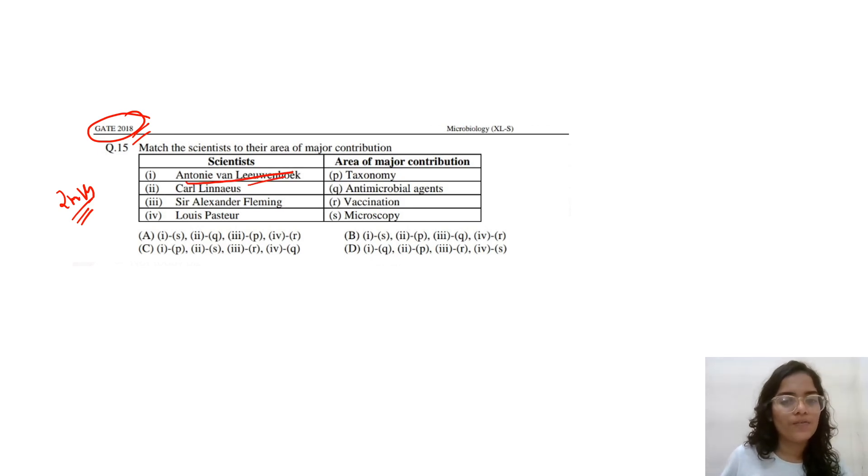So, what is Anthony Van Leeuwenhoek, who is famous for the discovery of a microscope. Then, Carl Linnaeus, who we know because he gave us the taxonomy. And Sir Alexander Fleming, who discovered penicillin, an antimicrobial agent. And Louis Pasteur, who discovered vaccination. Smallpox came. So, the answer should be SPQR.